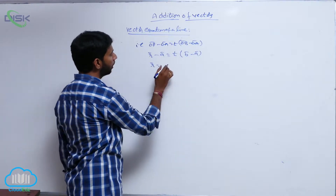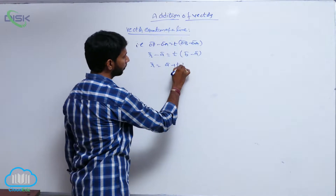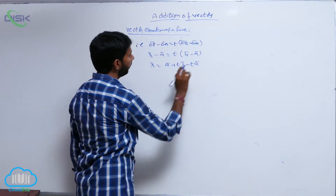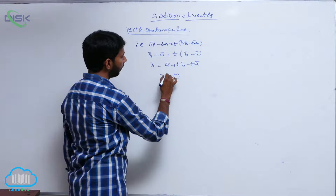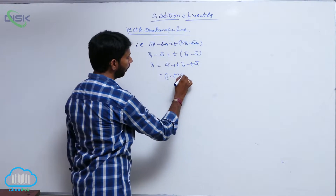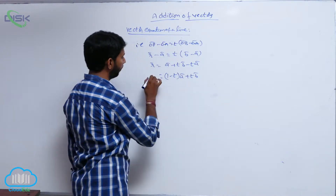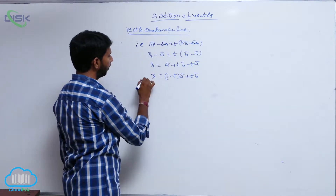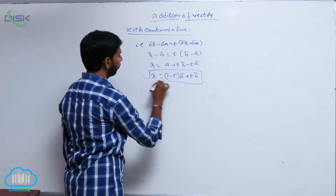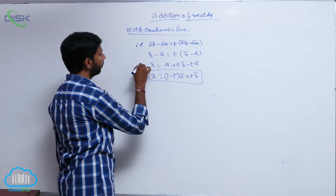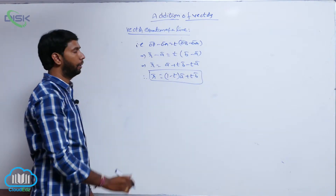That implies R̄ is equal to Ā plus tB̄ minus tĀ, that is equal to (1 minus t)Ā plus tB̄. So R̄ is equal to (1 minus t)Ā plus tB̄.